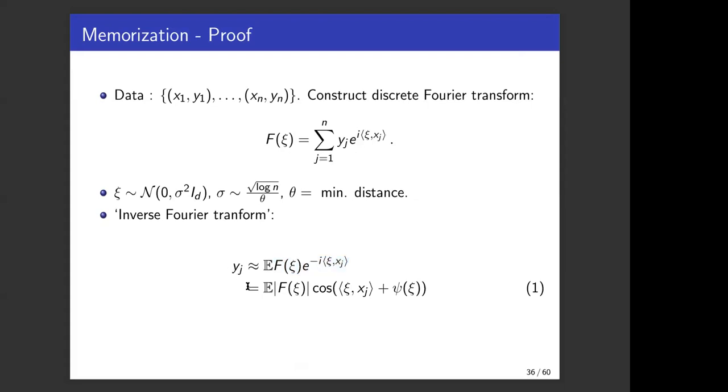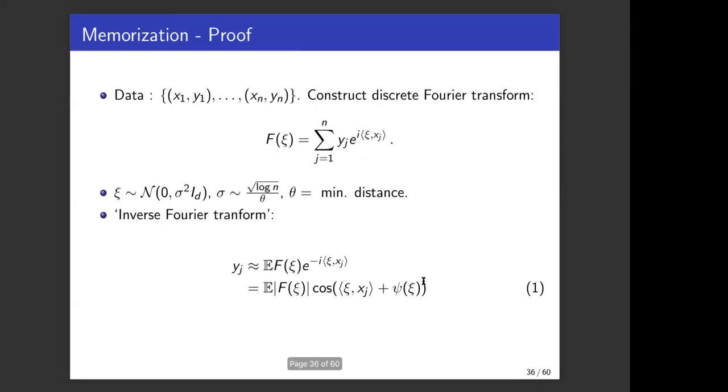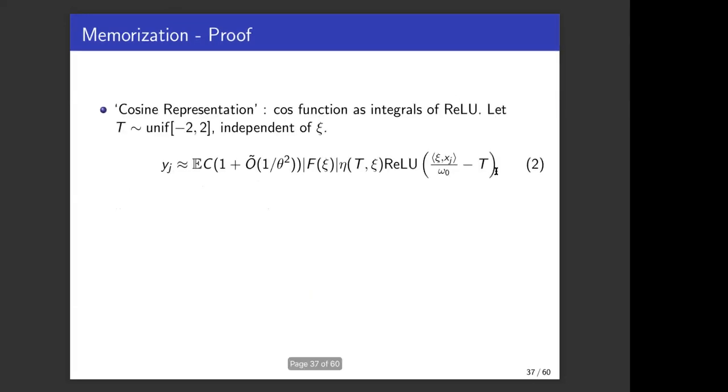We take psi to be a normally distributed random variable with sigma of the order root n over theta so that there are some cancellations. When we do this inverse Fourier trick it cancels out, it approximately gives you y_j and it cancels out the rest of the points. Doing this approximate inverse Fourier transform we get y_j equal to this quantity, which is actually an integral or an expectation over cosine functions or one-dimensional cosine functions. We do the standard trick which was used by Barron classically in the literature where we replace the cosine function with the additional expectation over relu by introducing a new random variable t. This follows from integration by parts formula. We have to introduce a new random variable t which is uniform in minus 2 comma 2.